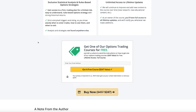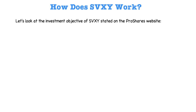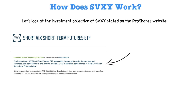To understand how SVXY works, the first thing we're going to do is look at the investment objective stated on the ProShares website. We can see that it says the ProShares Short VIX Short-Term Futures ETF seeks daily investment results before fees and expenses that correspond to one-half the inverse of the daily performance of the S&P 500 VIX Short-Term Futures Index. So that's a lot of jargon — let's break this down one sentence at a time.